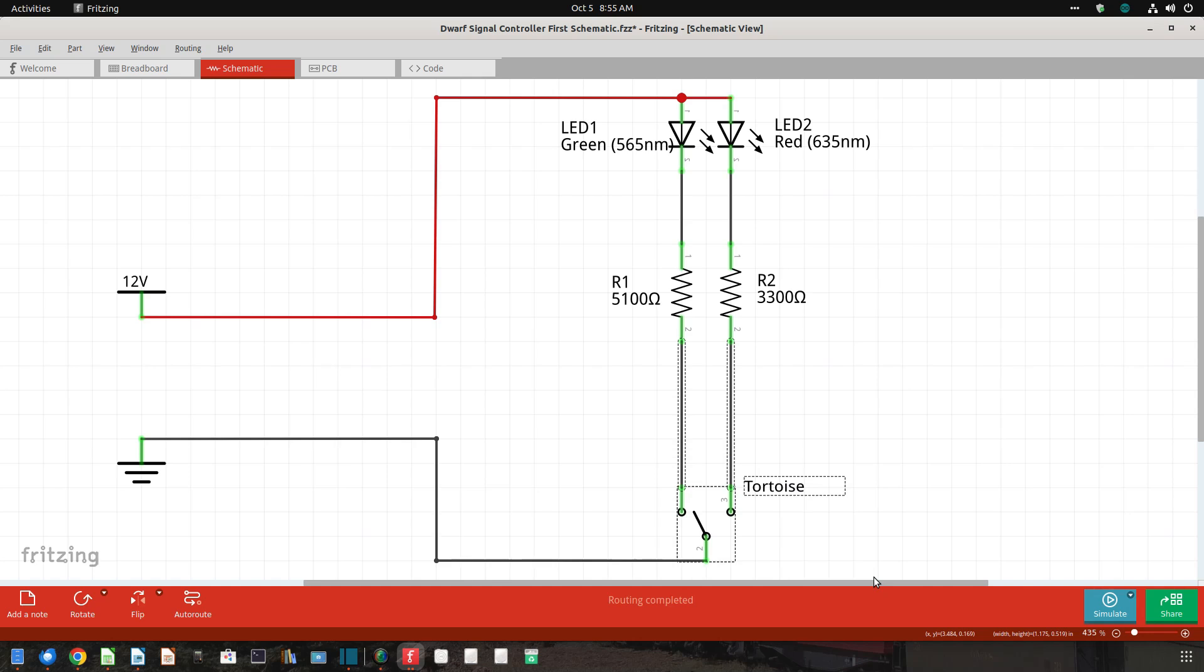This allows us to select an appropriate resistance for each of the LEDs. In general, the green LED will be much brighter and will require a higher resistance.